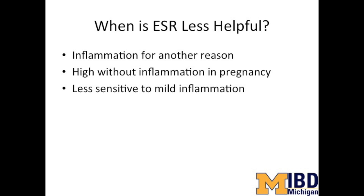Second, the sed rate tends to be artificially high during pregnancy, usually in the range of 30 to 50. And third, the sed rate is less sensitive to mild inflammation on the surface of the intestine. People with mild ulcerative colitis can have many shallow ulcers and still have a normal sedimentation rate.